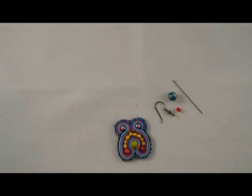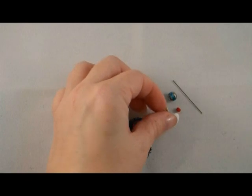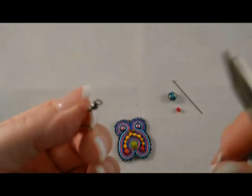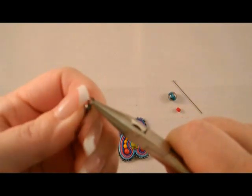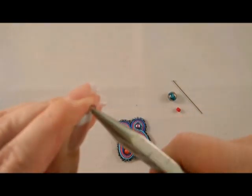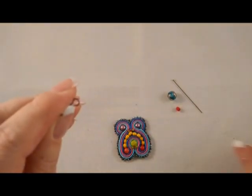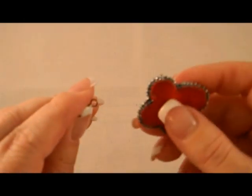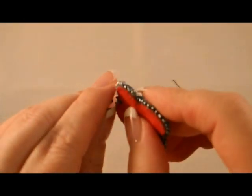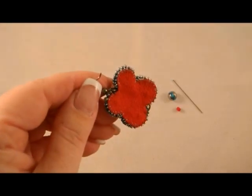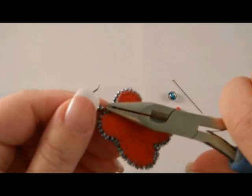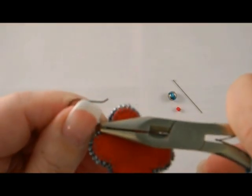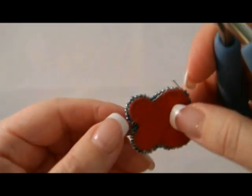When you finish the edge beading, bury the tail of your thread in the work. Now we're ready to finish it. We're going to be adding an ear wire first. Use your pliers to gently pry open the bottom of the ear wire.